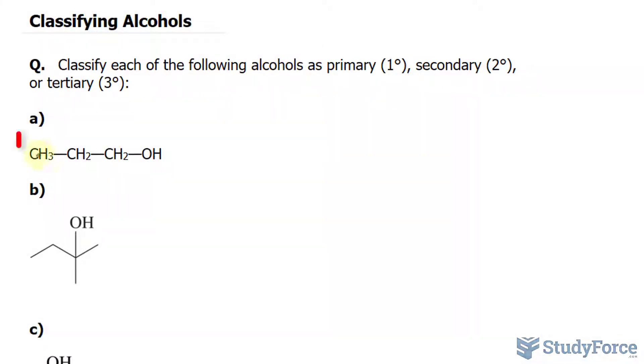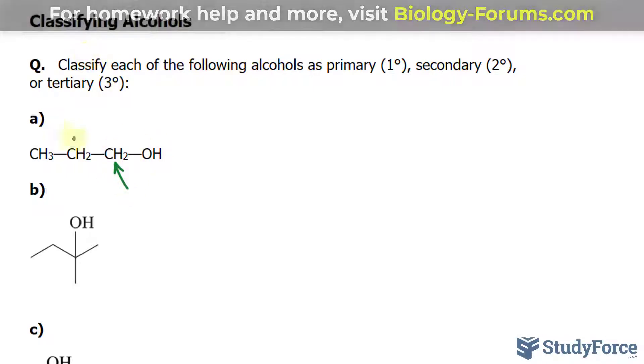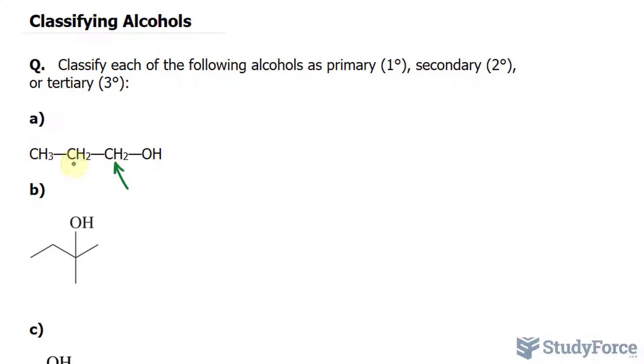In the first question, we have this chain of carbons attached to OH, and immediately the carbon attached to OH, this one, is attached to one other, or bonded to one other alkyl group, being these two carbon chains. Because it's only bonded to one other alkyl group, then we refer to this alcohol as being primary.